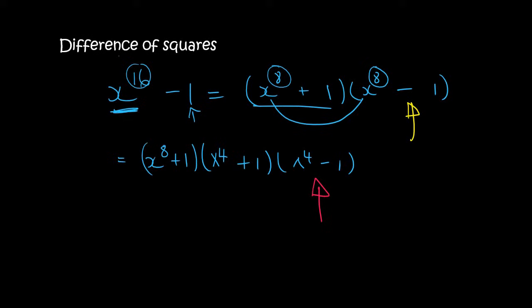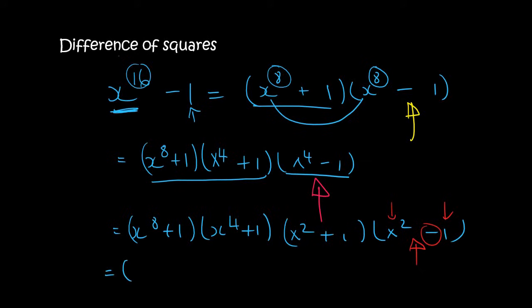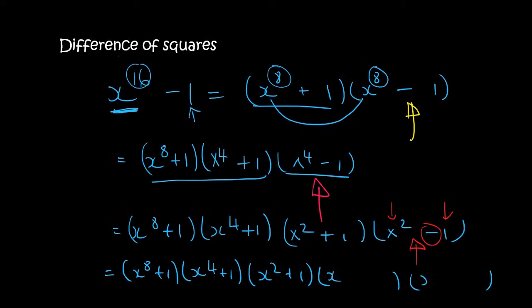This minus bracket can still go further, because x² times x² gives x⁴, and 1 times 1 gives 1. We keep rewriting the parts we can't factor in the front. That gives (x⁸ + 1)(x⁴ + 1)(x² + 1)(x² - 1). Now (x² - 1) can go even further: x times x gives x², and 1 times 1 gives 1, so it becomes (x + 1)(x - 1). At this point we are finished because the remaining minus bracket can't go any further.